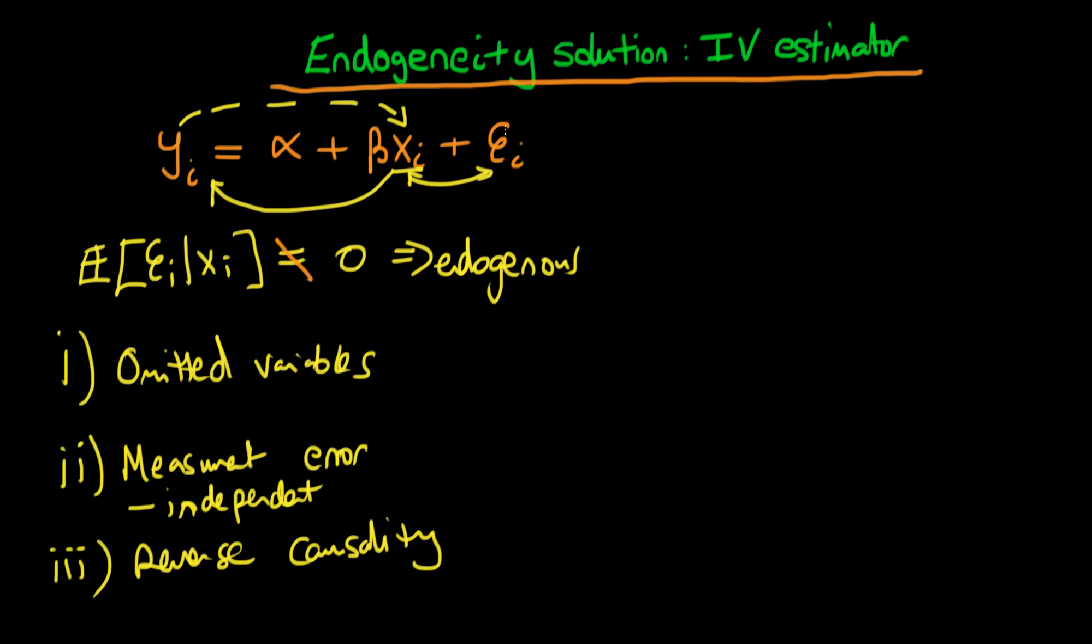Okay, so what are the problems with this particular violation of the Gauss-Markov assumptions? Well, the most important problem is that the expectation of our OLS estimator no longer equals our true parameter beta. In other words, OLS is what we call biased.